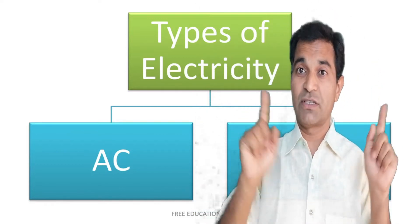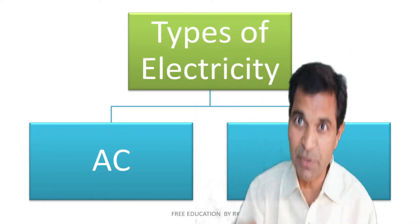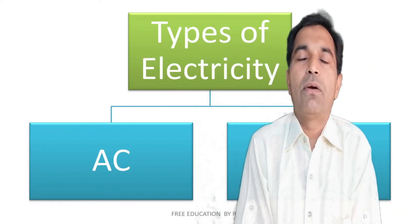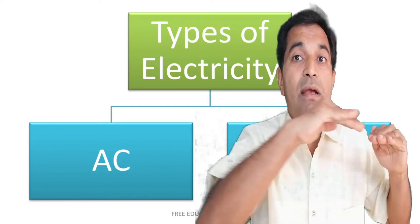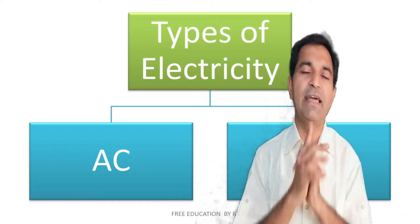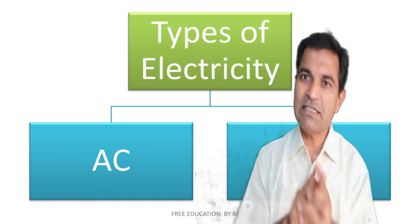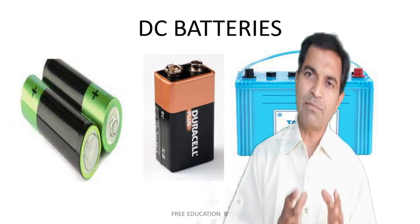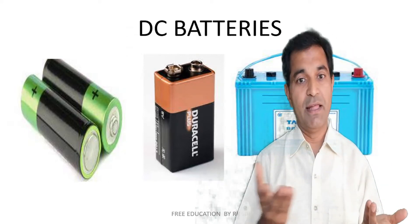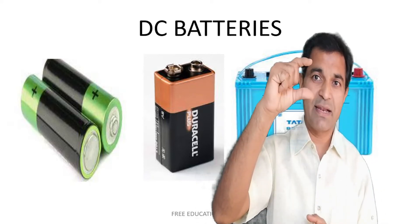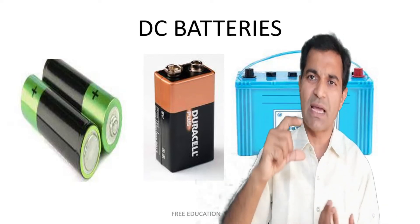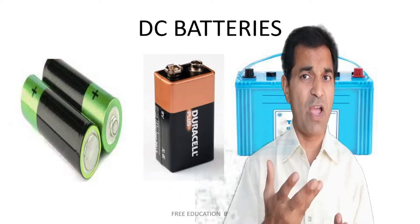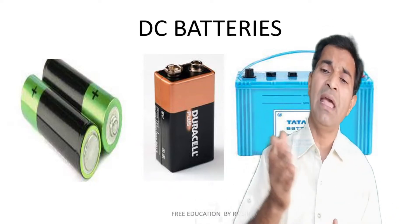AC is alternating current — it alternates direction, going one way and then the other. DC will flow steadily in one direction. AC is alternating current and DC is direct current. DC comes from batteries and cells. There are different sizes of batteries with varieties of voltages — for example, 1.5 volt, 3 volt, 6 volt, 9 volt, 12 volt — and larger batteries used in vehicles and inverters.